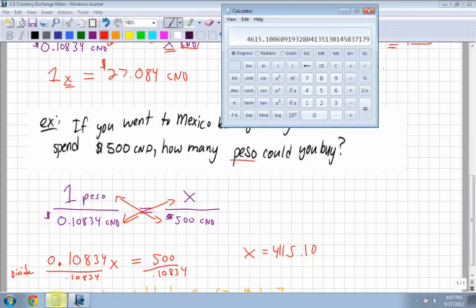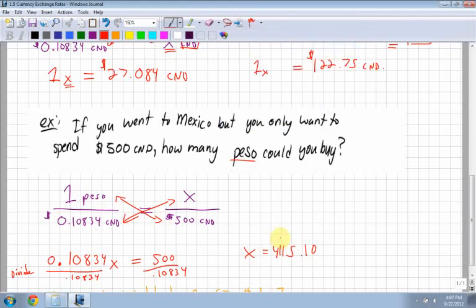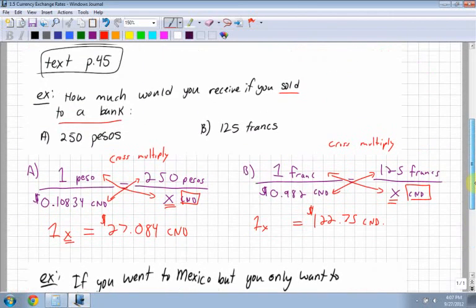So x equals 4,615.10 pesos. So if you have $500 Canadian, you can buy 4,615.1 pesos.